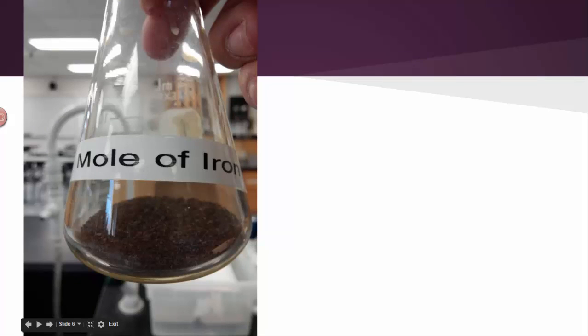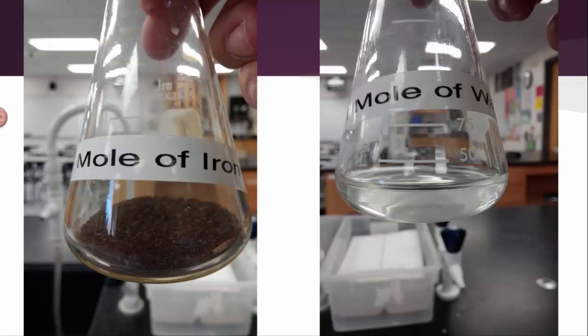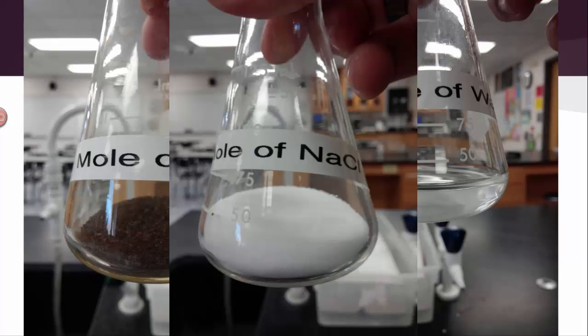So how much space do you think that many atoms of iron would take up? Well, there's a picture of it. That's one mole of iron. It's not very big, is it? That's just a regular old flask. And that little bit of brown, gray powder in the bottom, that's 6.02 times 10 to the 23rd atoms of iron. How about a mole of water? There it is. Just about 18 milliliters worth of water. A mole of sodium chloride, table salt, that's it. So what does that tell you about the size of the particles of these substances? If I can have so many in such a little amount, they must be really, really small, right? That's why we need such a big number. Because these particles are tiny. They're so small that we need that many of them just to be able to work with the stuff.